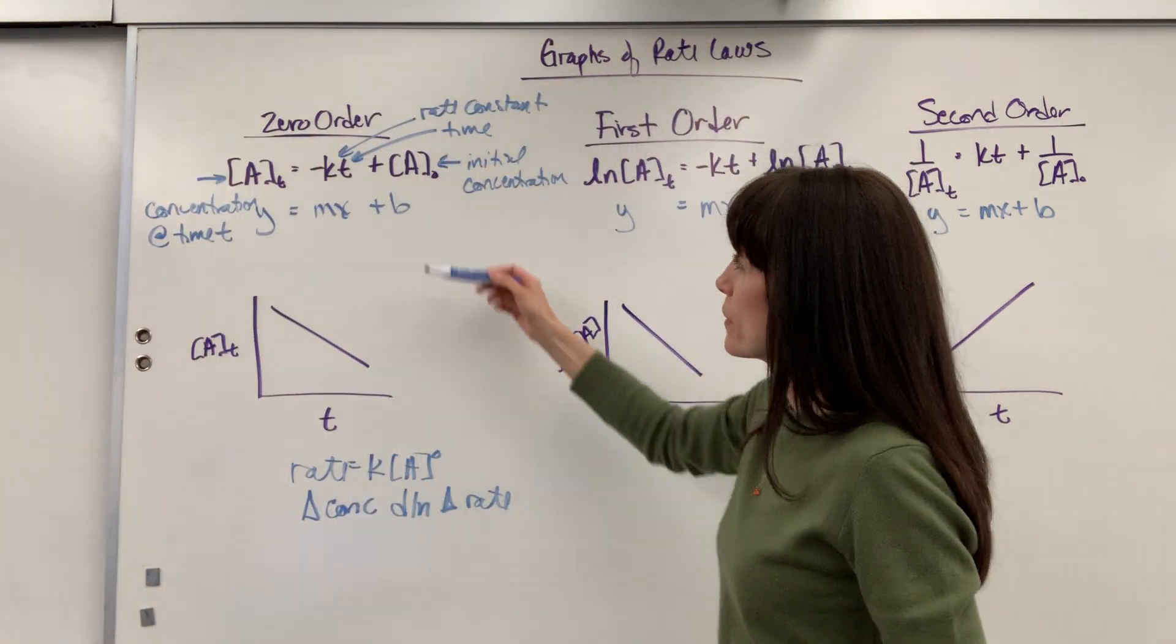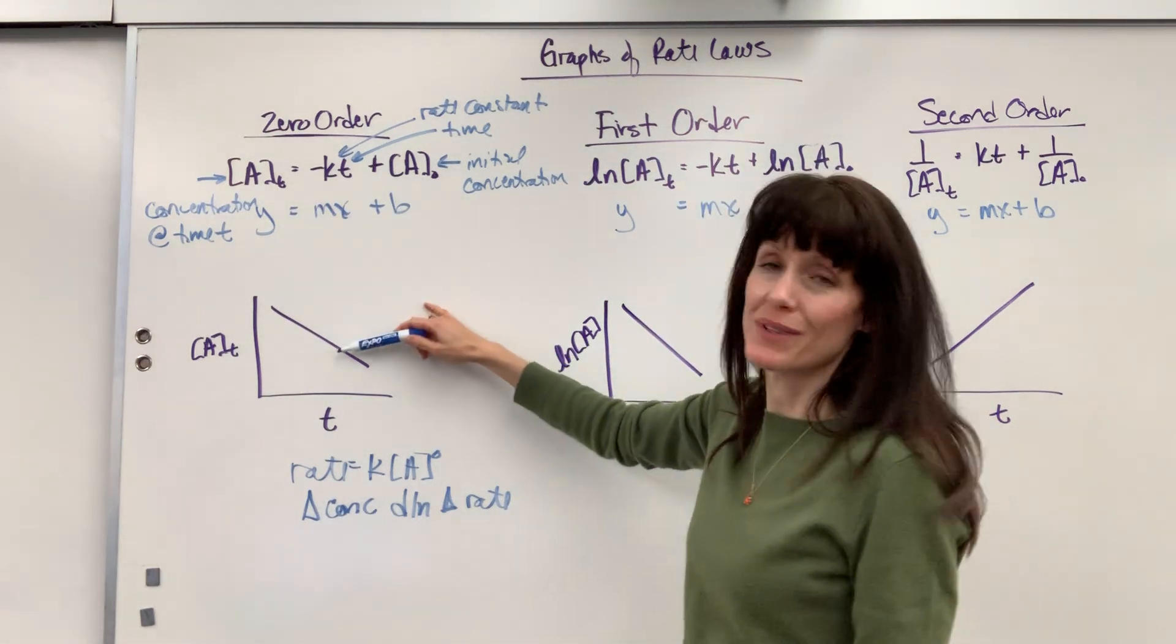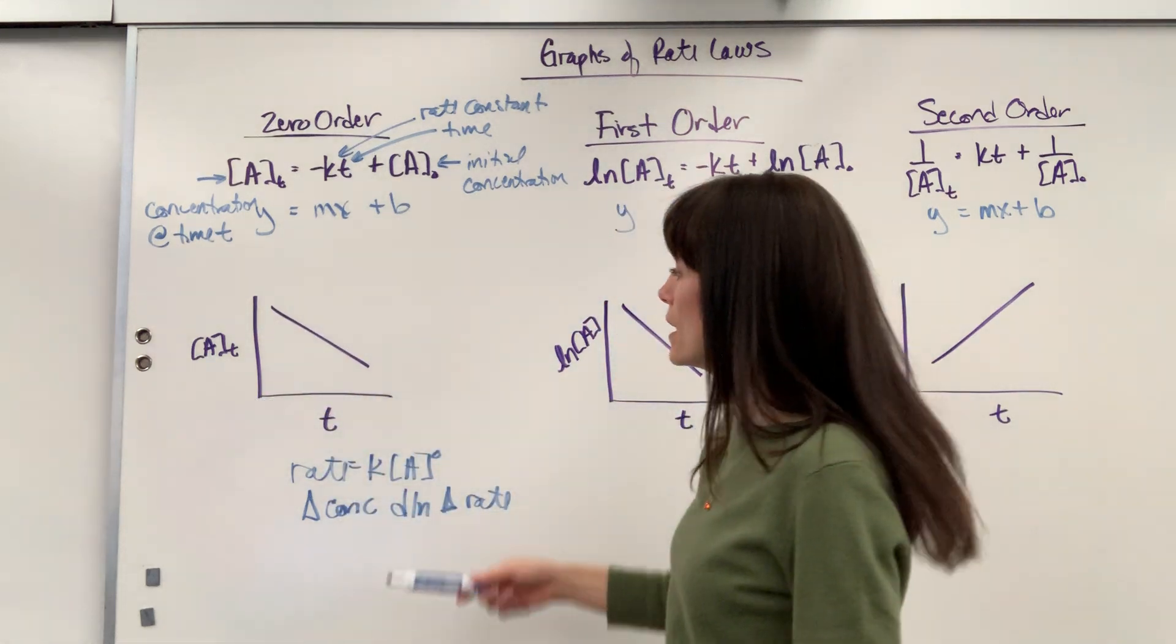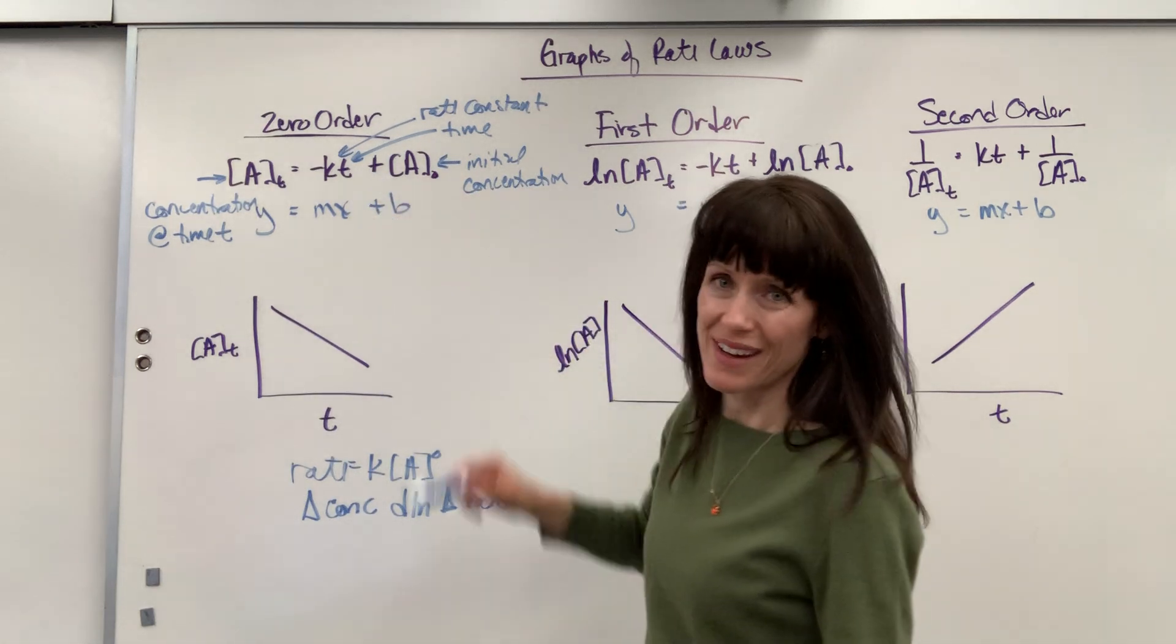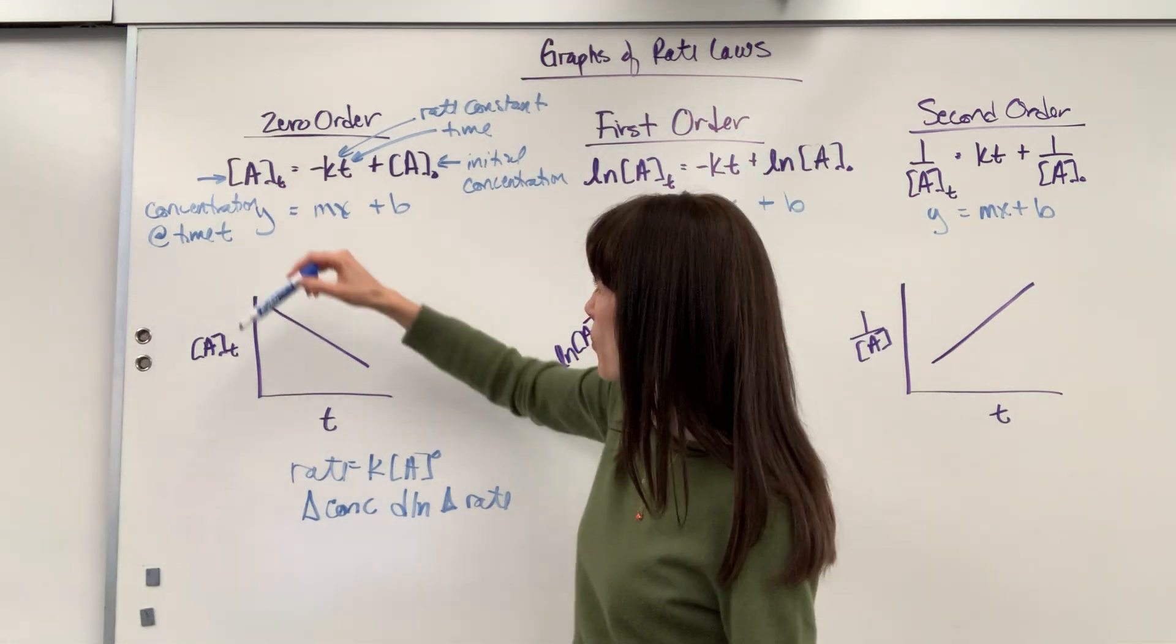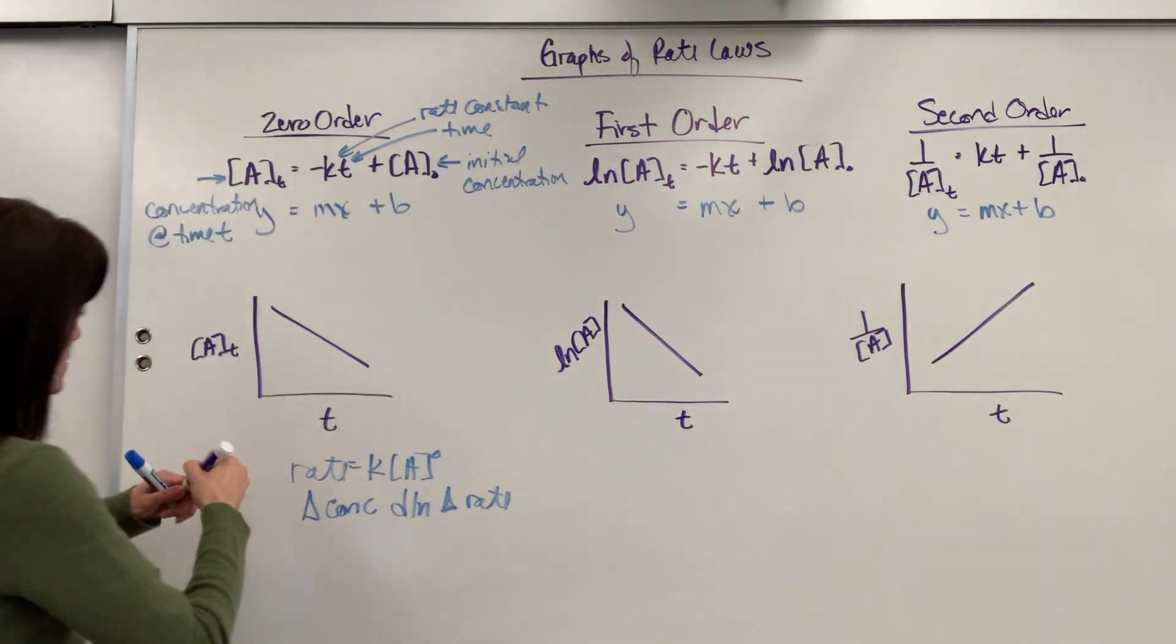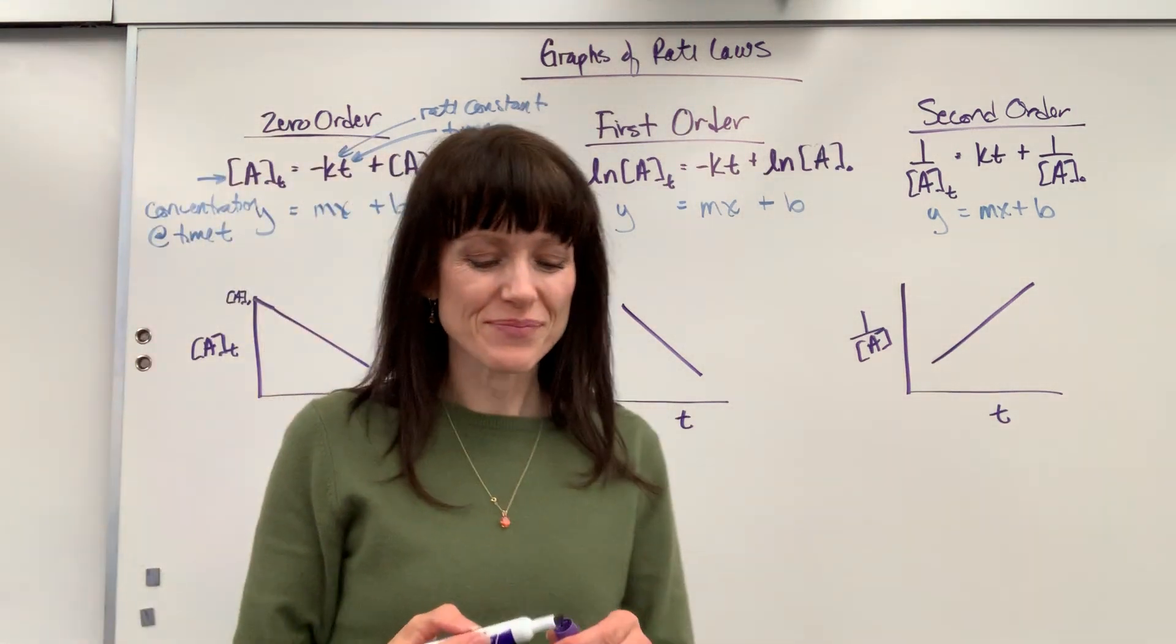If we were to graph this, Y equals MX plus B. I purposefully wrote it this way so that we could graph it. There's my Y axis, it's concentration at time T. Here's my X axis, that's going to be T. The A naught, that's going to be where it intercepts our Y axis, that Y intercept. That would be your A naught, the initial concentration.